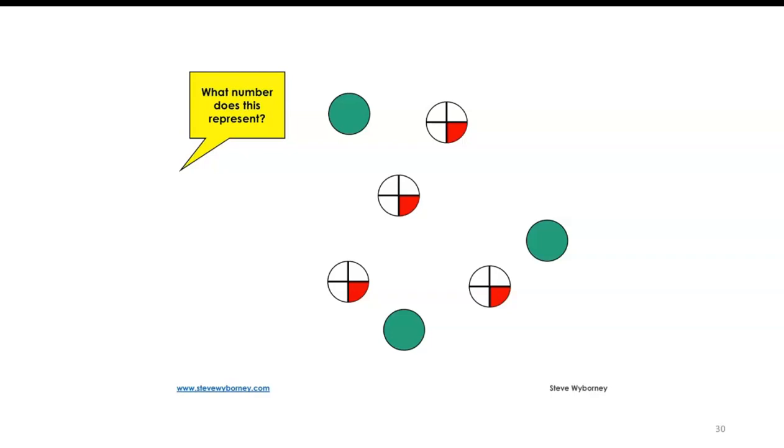So what is the shaded part? I have three whole circles and then four quarters. Three and four fourths comes out to be four. So this whole shape, all the shaded parts, represents four.